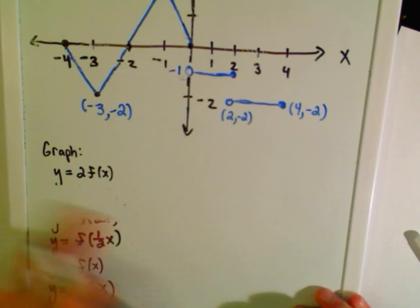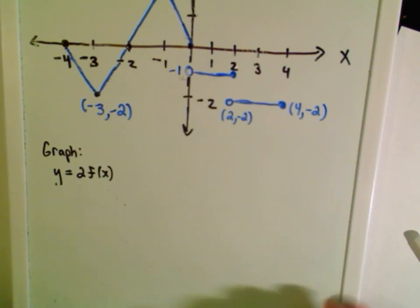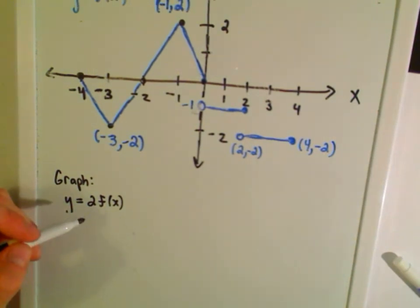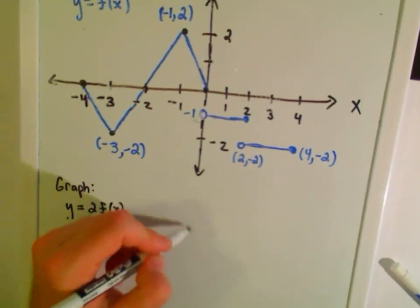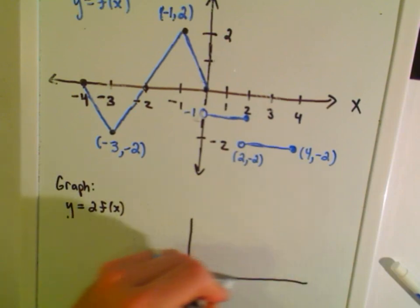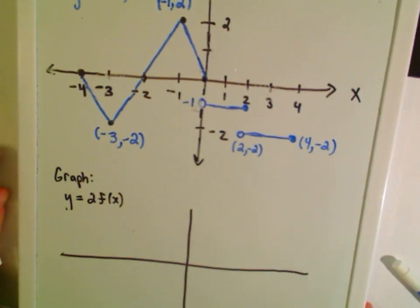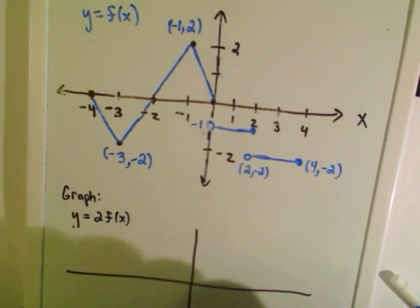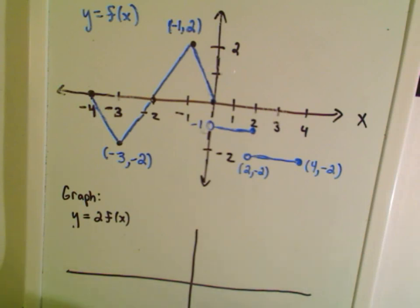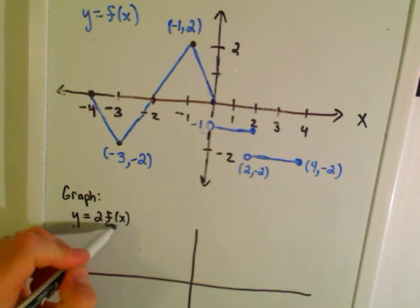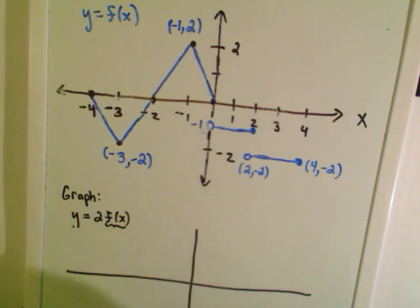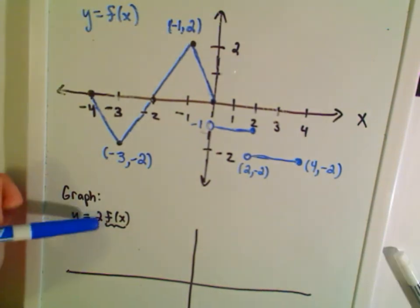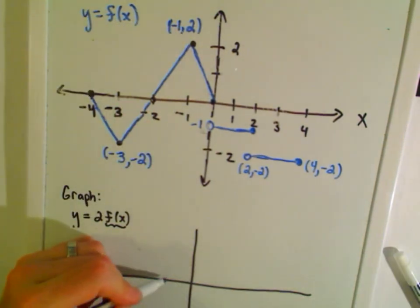Let's do the first one. I'm going to graph what 2·f(x) looks like based on the original function. Basically what happens is you're multiplying — think about f(x) as y. You're multiplying all the original y-coordinates by two.